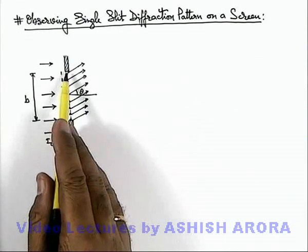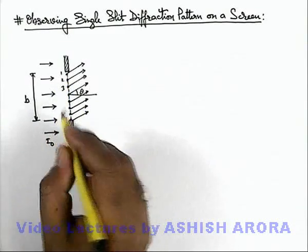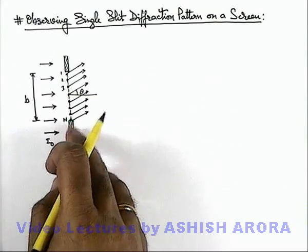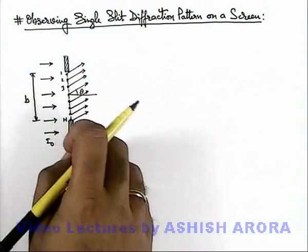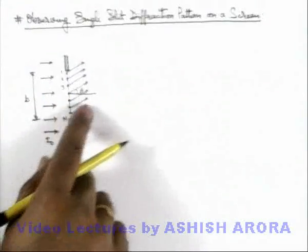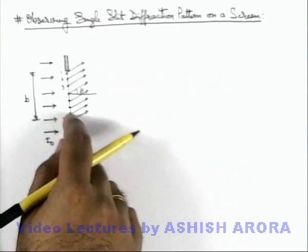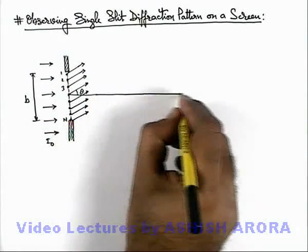And due to all these wavelets 1, 2, 3 up to n, light waves are emitted in all directions and here we are considering light waves which are going in a direction at an angle theta from the direction of incident light.